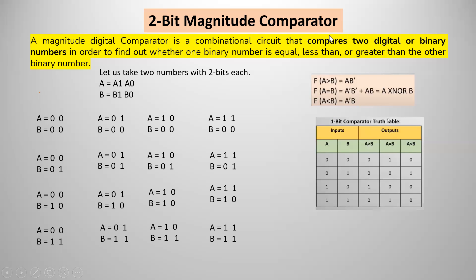We take the two numbers a and b with two bits each: a equals a1a0 and b equals b1b0. These two are in variable form. For these variables, we assign binary values. The total number of combinations is 2 to the power 4, which equals 16.